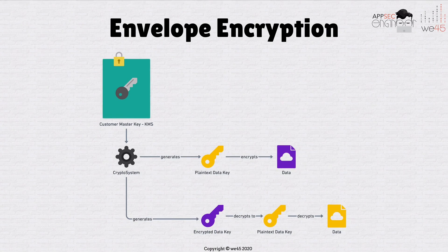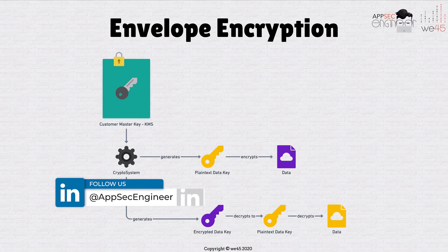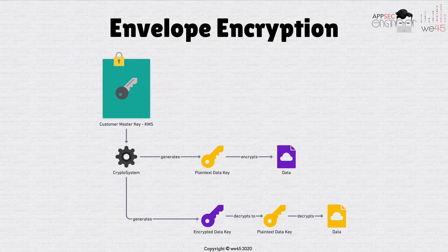So the idea is that you have a CMK — the customer master key — and you don't directly encrypt and decrypt data with it. You first generate a plain text data key, and with that data key you actually encrypt and decrypt the actual data, not directly with the CMK. You generate an intermediate key, called the data key, to encrypt and decrypt the actual data. That's what envelope encryption is.